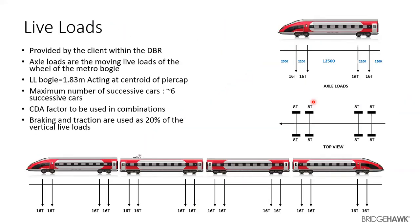If you define the track on Midas Civil software, you can directly run the vehicle on Midas Civil and get your results very quickly. The live load — the lever arm for a bogie is 1.83 acting at the centroid, and maximum number of successive cars — all of this has to be specified in the DBR.